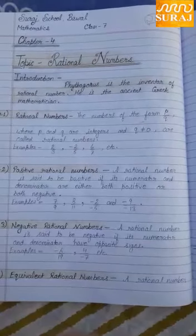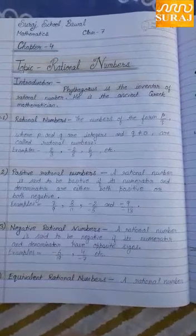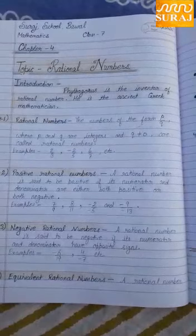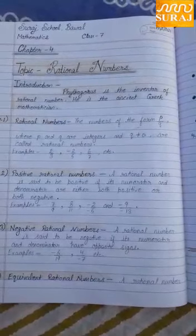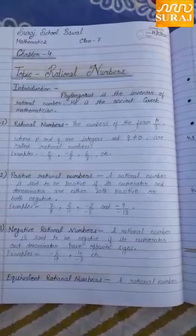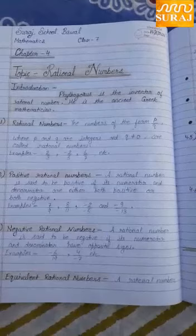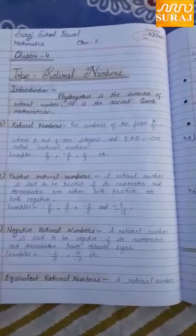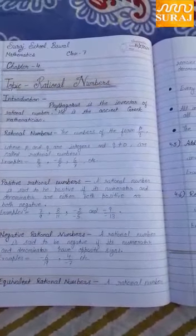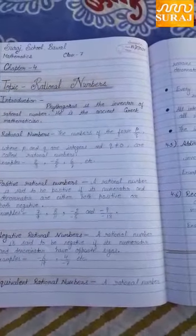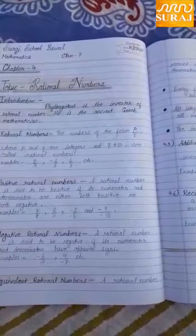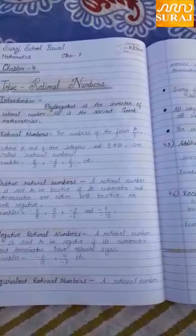Hello everyone, this is Manjit and I am here again with a new chapter, chapter number 4. The name of the chapter is Rational Numbers. We have already studied about natural numbers, whole numbers, integers and fractions. Now we discuss about rational numbers.